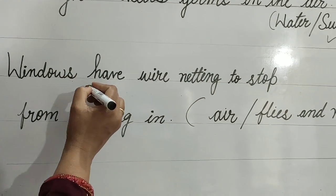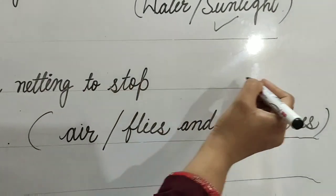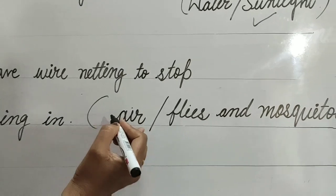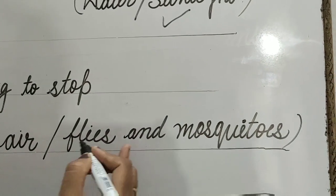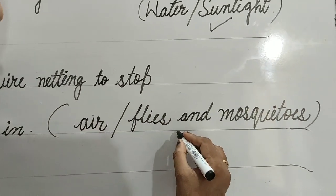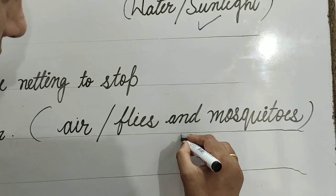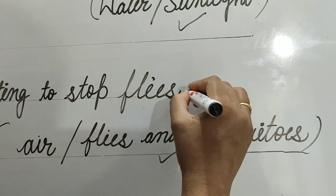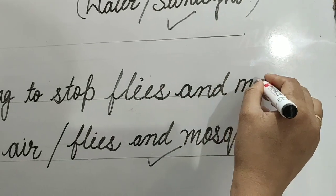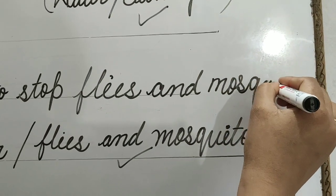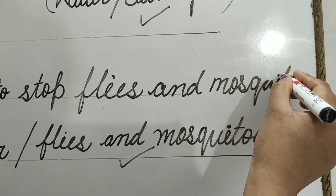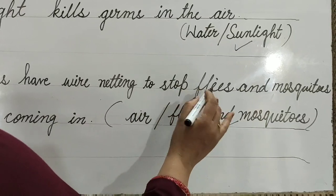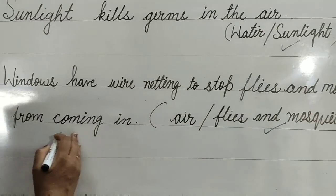Question 3: Windows have wire netting to stop dash from coming in. The options are air, flies, and mosquitoes. Flies and mosquitoes is the correct option. Tick here and write here. Windows have wire netting to stop flies and mosquitoes from coming in.